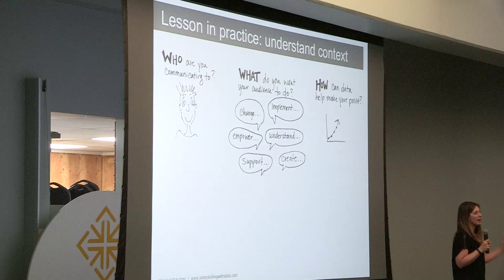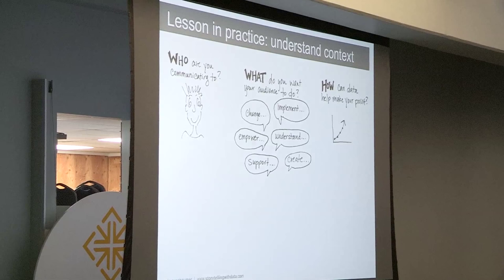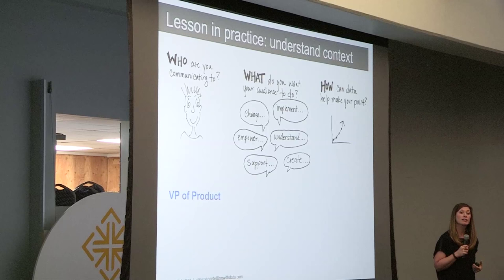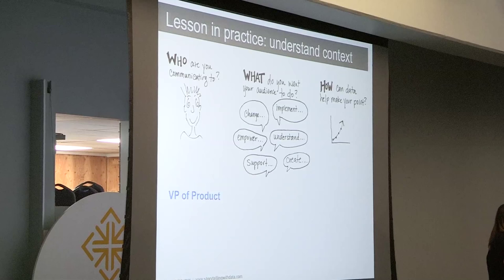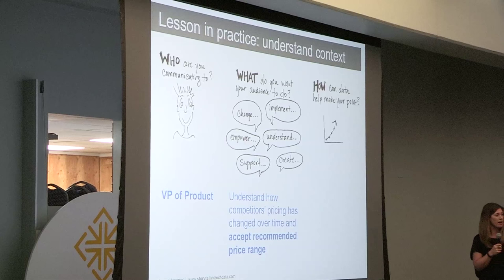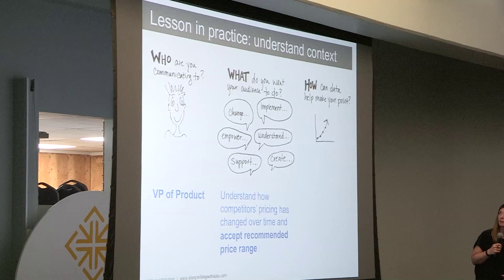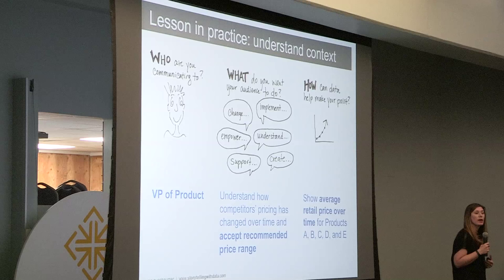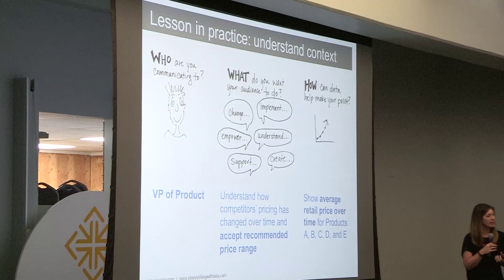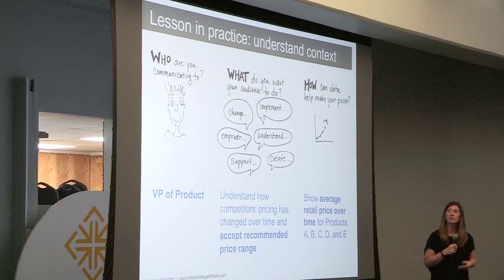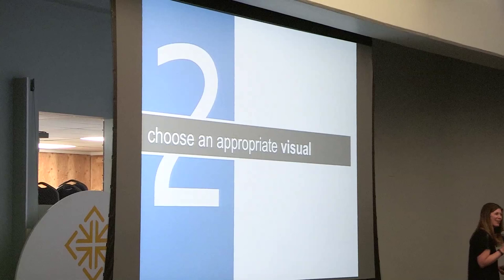In this case, let's assume our audience is the decision maker — the VP of product, the person deciding the pricing. We want them to understand what the competitive landscape looks like over time, and then we're going to make a recommendation for pricing. We want them to accept that recommendation as input in the eventual price-setting. When it comes to how data can help make our point, we can look at average retail prices of competitive products over time, build that context, and have it lead up to our recommendation. That was the quick version of lesson one on context.